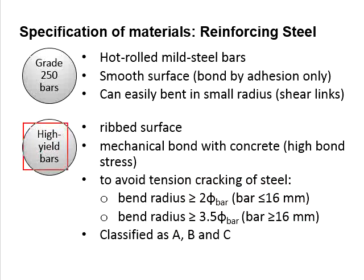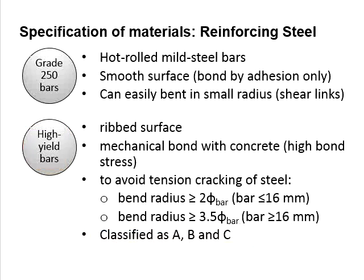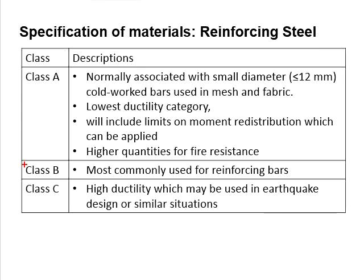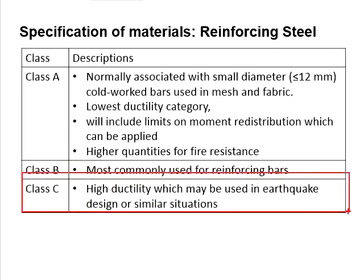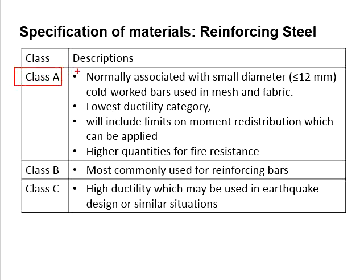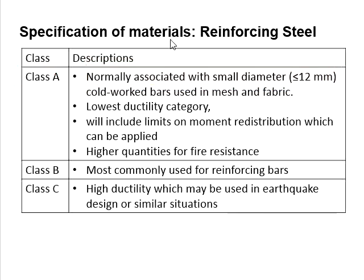High yield steel bar can be classified as Class A, B, and C. Class B is the most commonly used reinforcement bar in typical reinforced concrete structures. Class C has high ductility and may be used in earthquake resistance design. Class A is normally associated with small diameter bars and is normally used in the form of mesh or fabric.